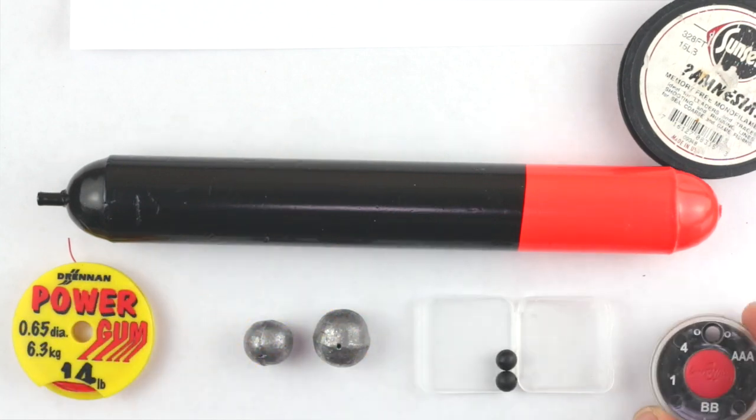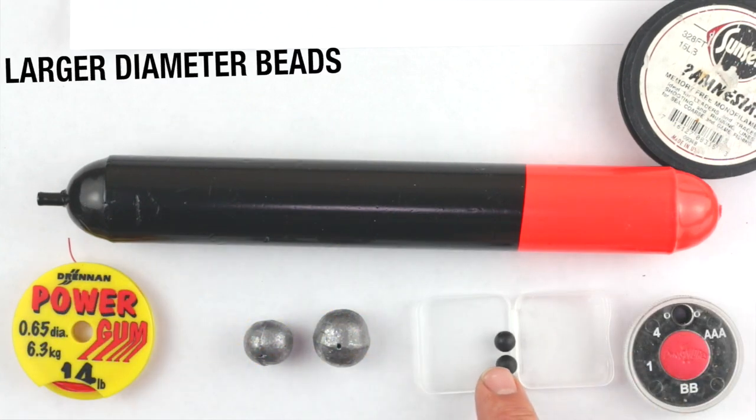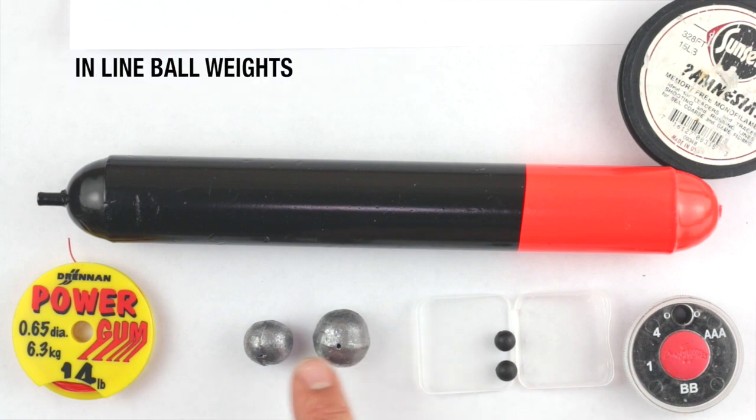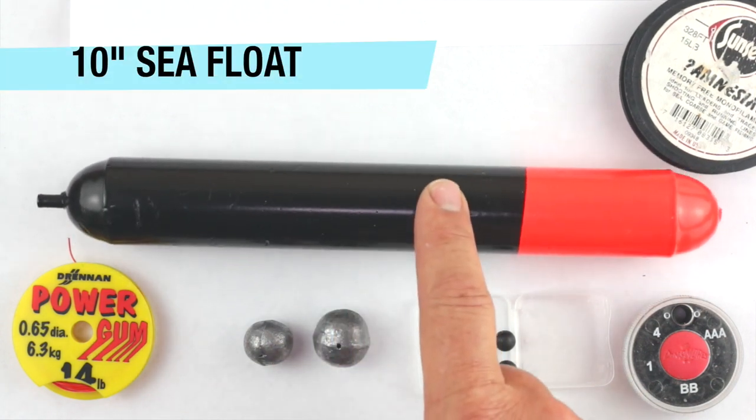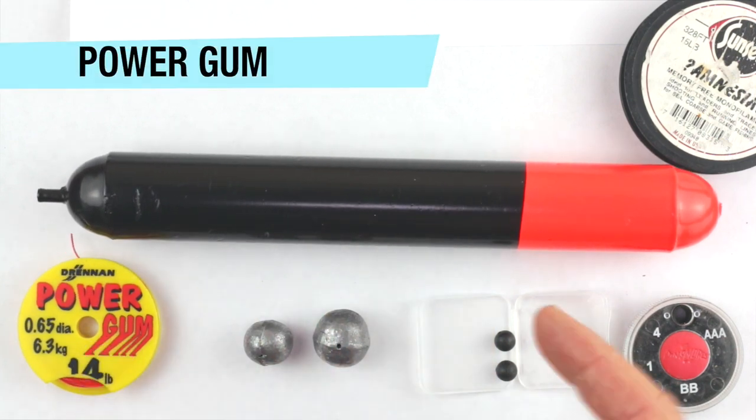An option is some of these BB shots as well, but you will need beads, about 10mm beads, and inline weights, about one ounce for that float, which is a 10 inch, plus your power gum as well.